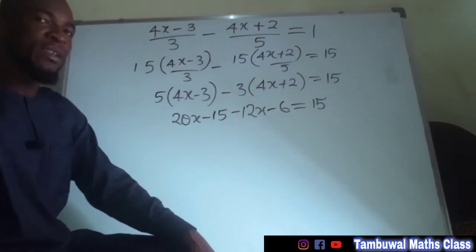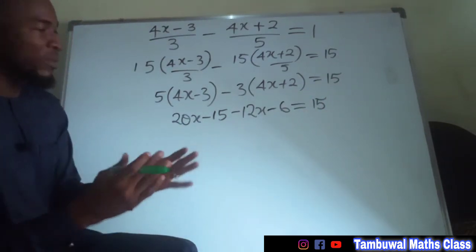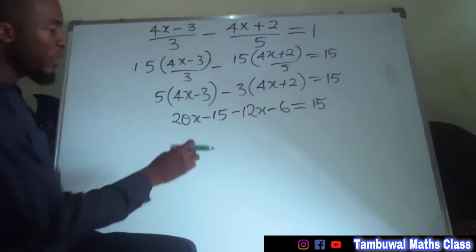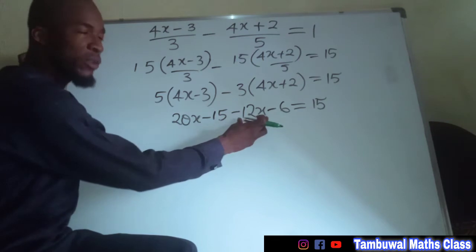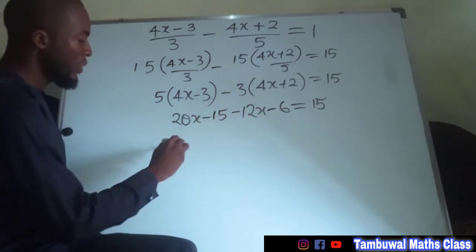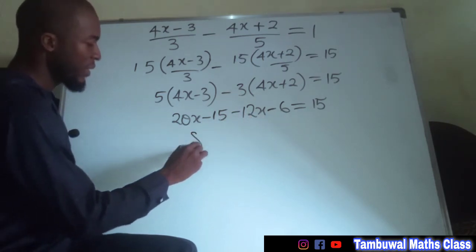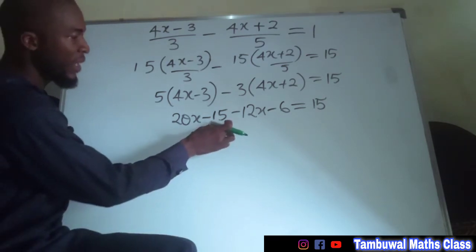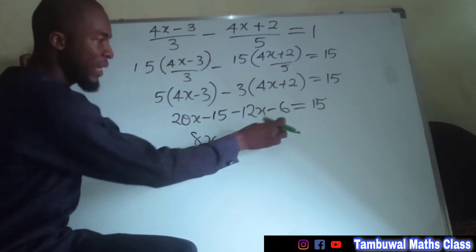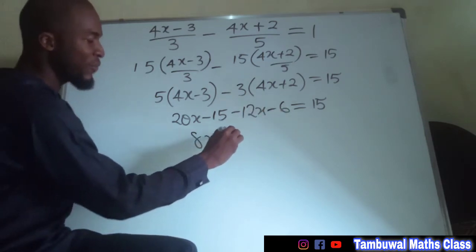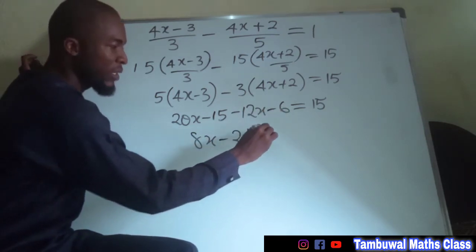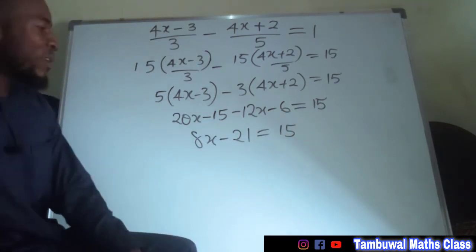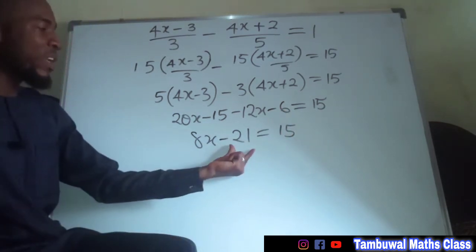Now we are going to collect the like terms — those with x together and the constant terms together. We have 20x minus 12x, which gives us 8x. Then negative 15 minus 6 is negative 21, and this equals 15.